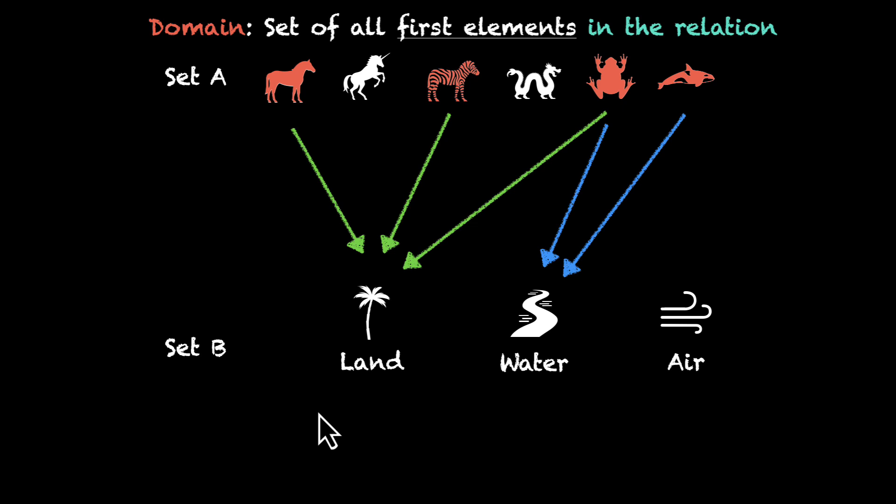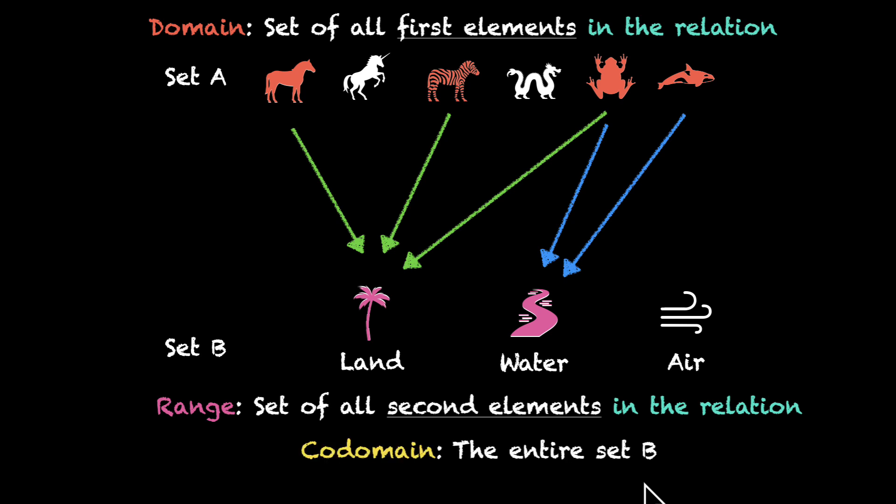What about set B? Well, we have land and water that are related, air is not. So land and water together form range. That's the set of all second elements in the relation. And I know it's not asked in the question, but just to clarify,